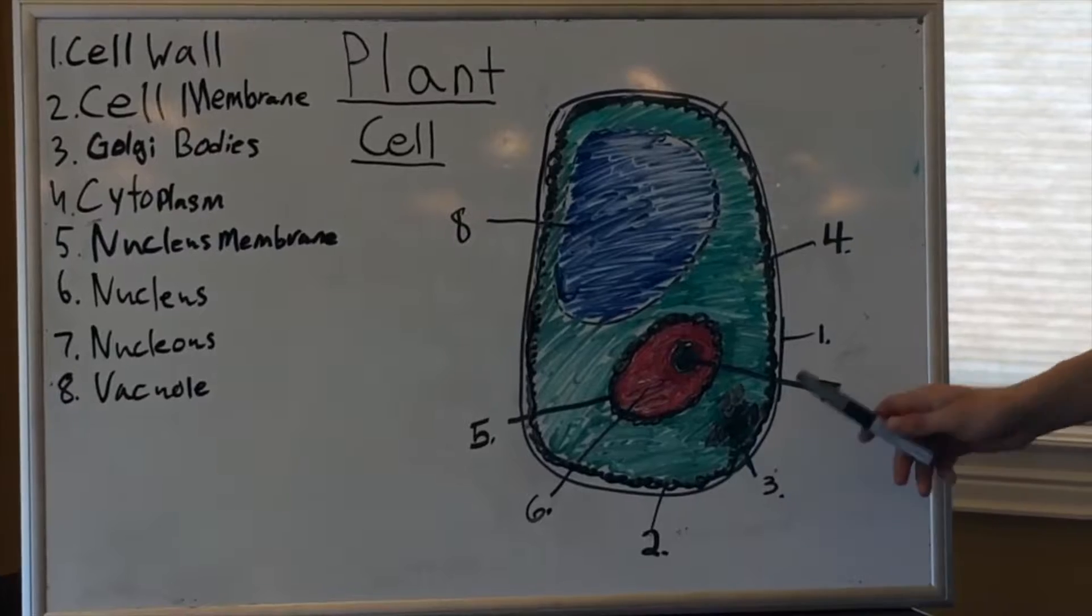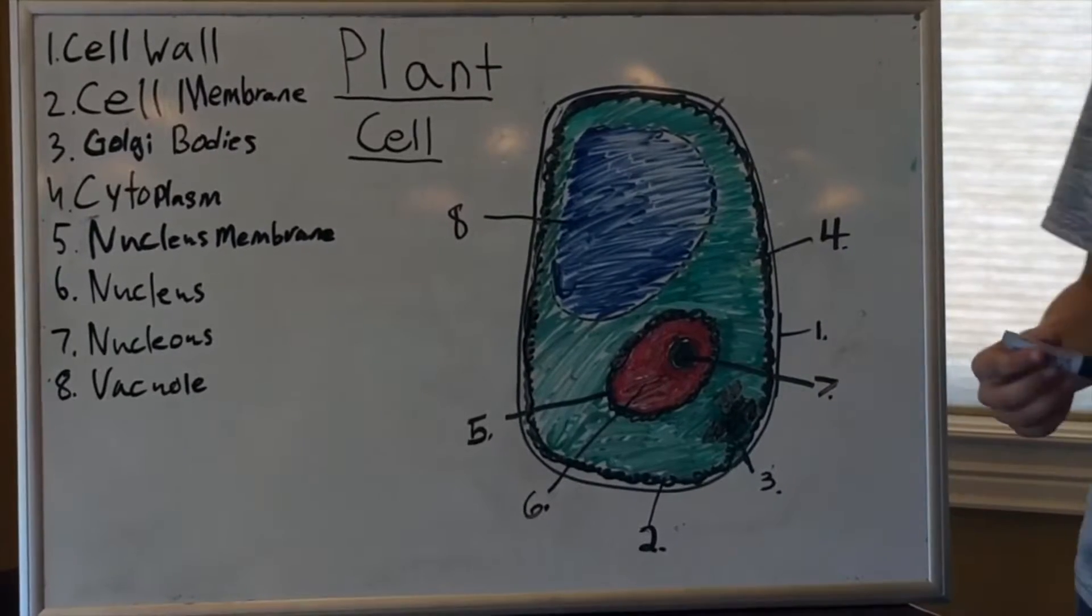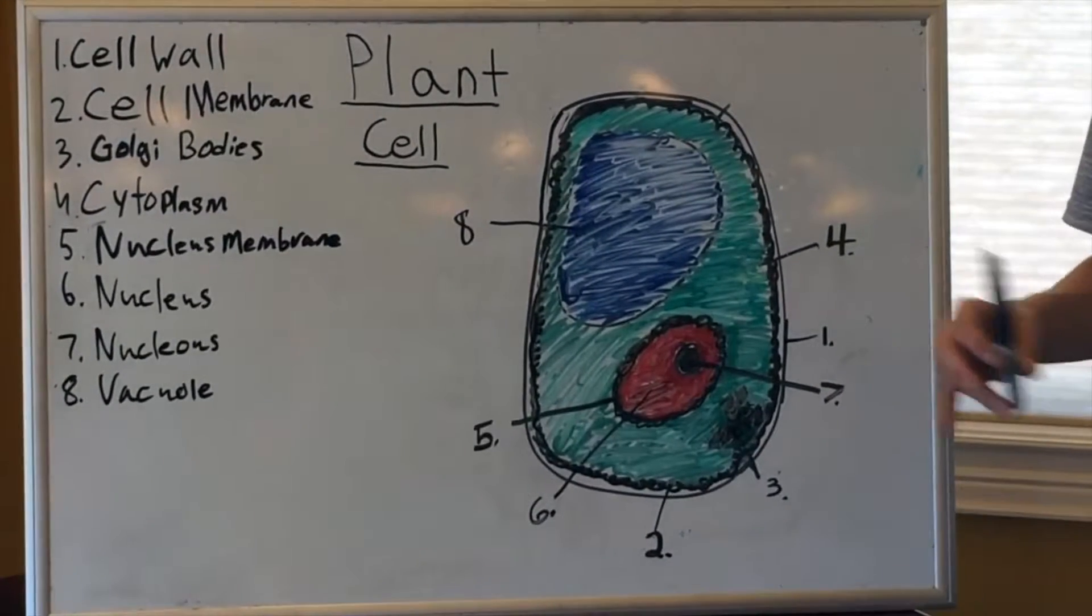The third part is these little sacs here. They are called the Golgi bodies. The Golgi bodies contain food like protein and carbohydrates.